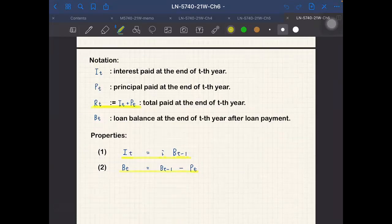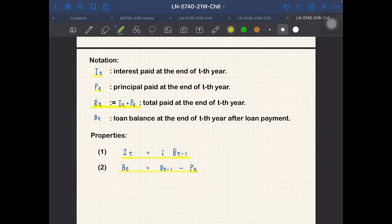So some notations we have to study. Interest rate, interest portion I_T - interest portion for the T-th payment, typically T-th year. P_T is the principal portion. R_T is the total, I_T plus P_T. Often this is constant, so R. And B_T is the balance after the T-th payment, typically T-th year.